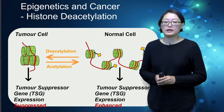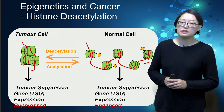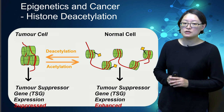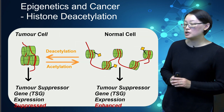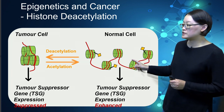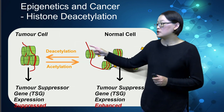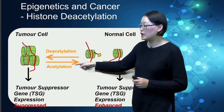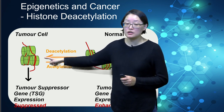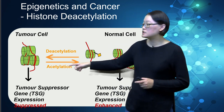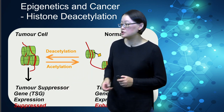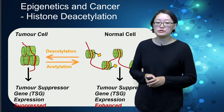Another important epigenetic factor associated with cancer development is histone deacetylation. As mentioned earlier, histone acetylation removes the positive charge on histones, promoting the formation of open chromatin with enhanced gene expression. However, in cancer, there is a significant reduction in acetylation and an increase in deacetylation. This leads to suppression of tumor suppressor gene expression and is associated with an increased risk of cancer.